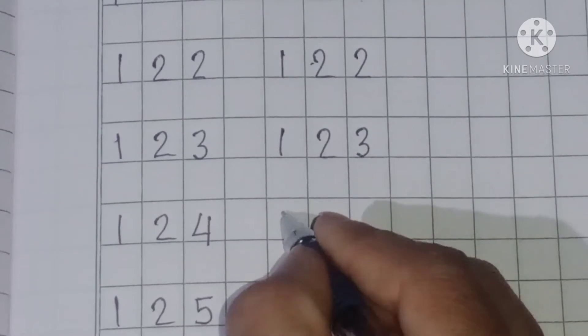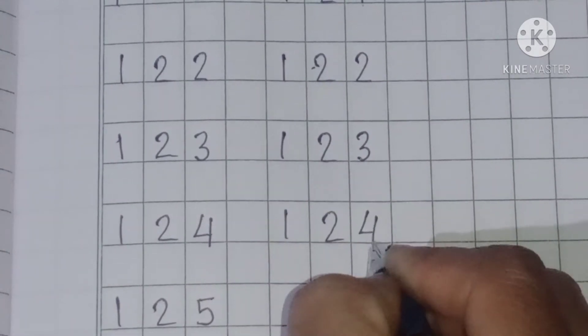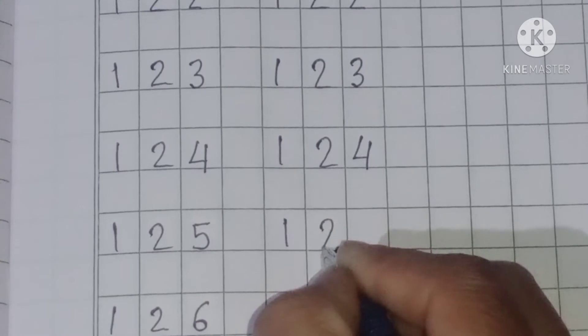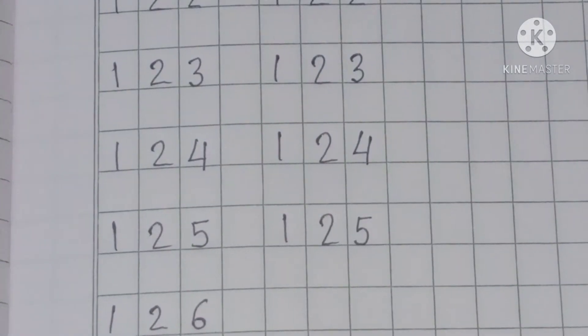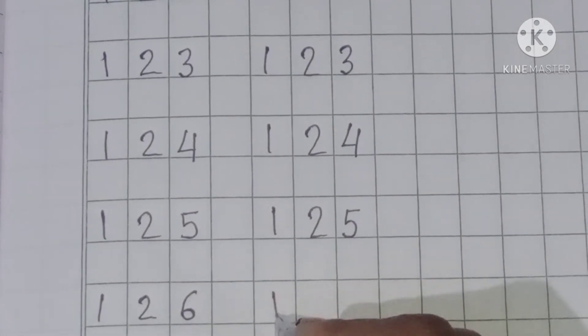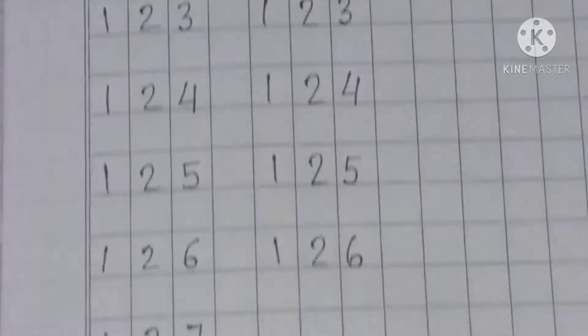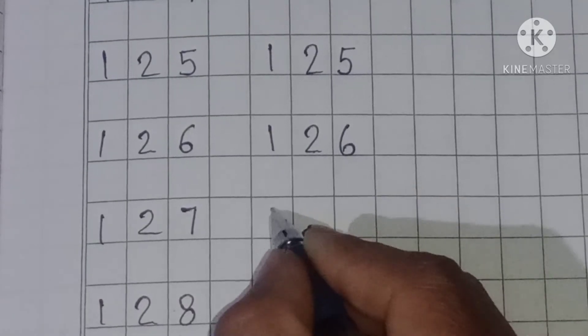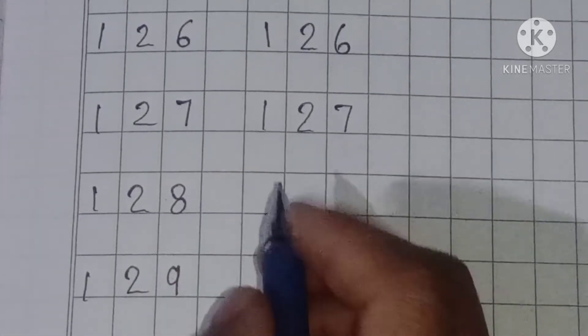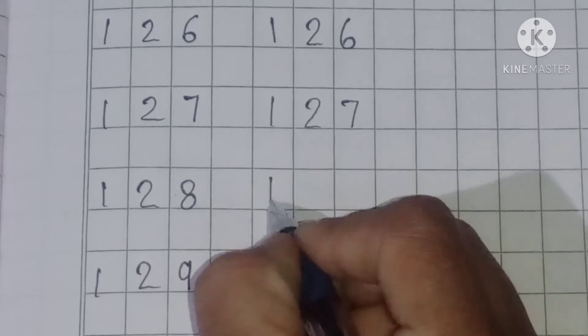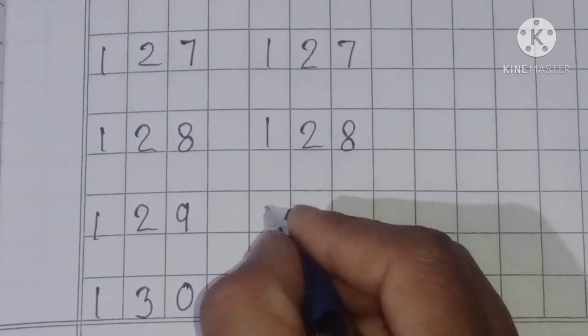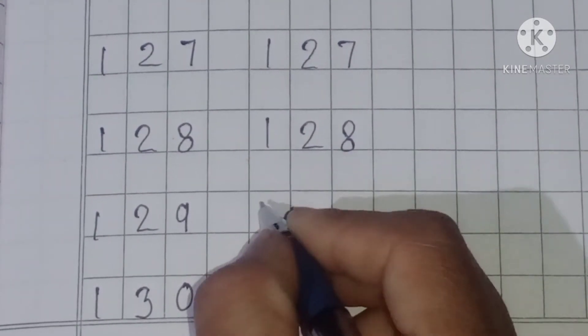Next number 1, 2, 4: 124. Next number 1, 2, 5: 125. What comes after 25? 126: 1, 2, 6. Next number 1, 2, 7: 127. Next number 1, 2, 8: 128. What comes after 28? 29: 1, 2, 9.